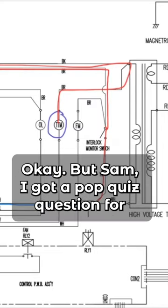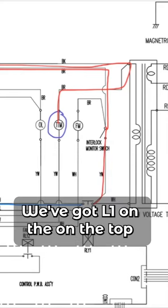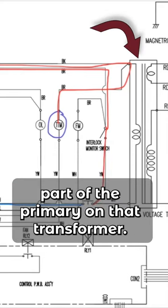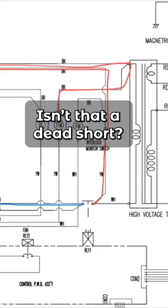Okay, but Sam, I got a pop quiz question for everybody pertaining to no heat. We've got L1 on the top part of the primary on that transformer. We've also got L1 on the bottom part. Isn't that a dead short?